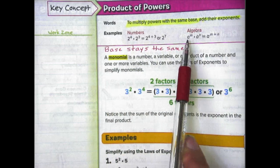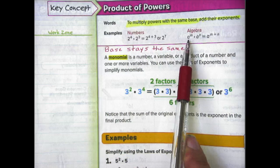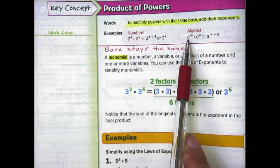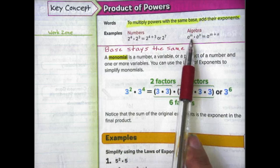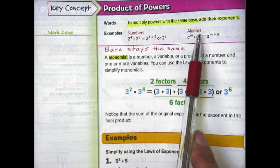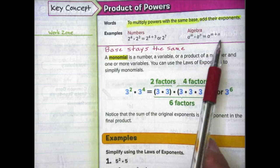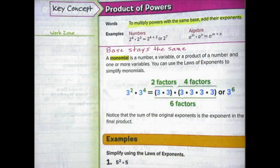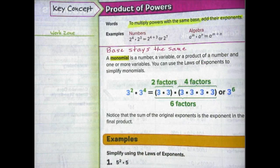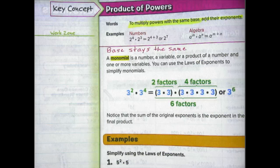You can also do it using variables. In algebraic form: a to the m power times a to the n power equals a to the m plus n. So it doesn't matter what the exponents are — we just add them.